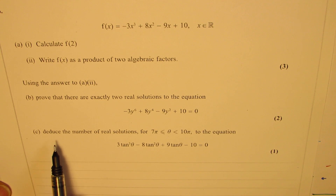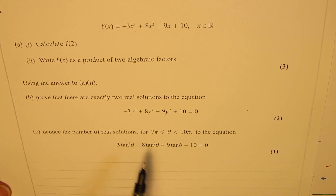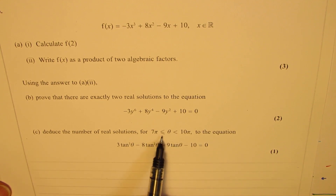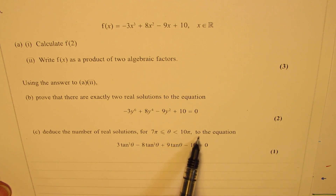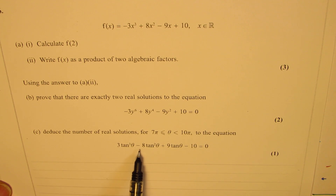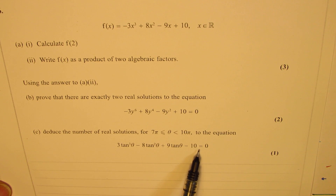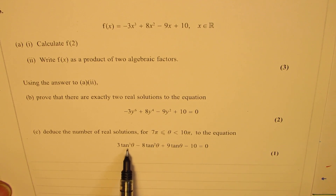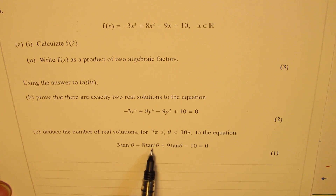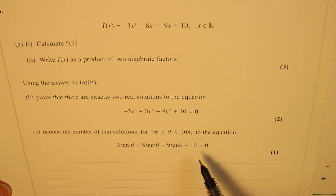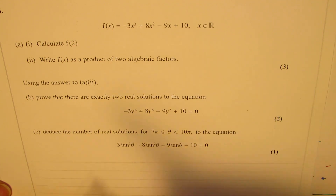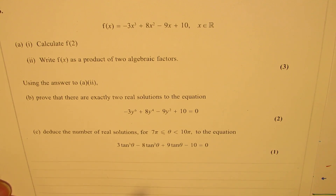Part C is: deduce the number of real solutions for theta greater than or equal to 7 pi and less than 10 pi, for the equation 3 tan cubed theta minus 8 tan squared theta plus 9 tan theta minus 10 equals 0. Here, x cubed has become tan cubed theta, x squared has become tan squared theta, and tan theta is replacing x. That is the relation between the given equation and the polynomial. You can always pause the video, answer the question, and then look into my suggestions.